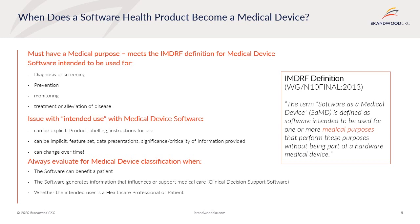The regulatory or market authorization process includes classifying the software based on the risk to the patient. The information used to evaluate classification and whether the software is a medical device should take into consideration how the software can benefit a patient, if the software generates information that influences or supports medical care — also known as clinical decision support software — and whether the intended user is a healthcare professional or patient.